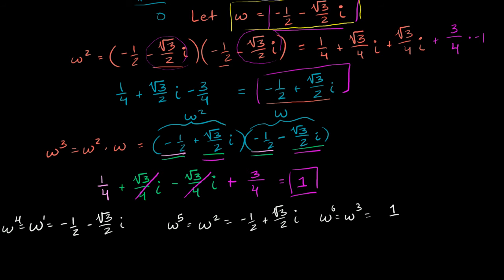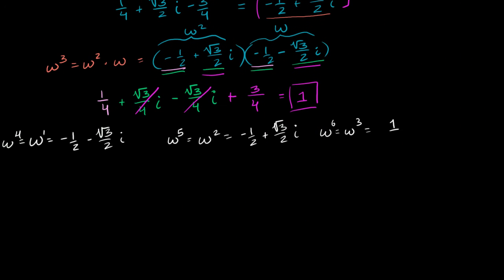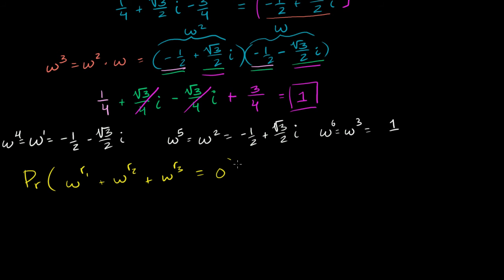The reason I went up to the sixth power is because in the original problem we're rolling a die. On a normal six-sided die, we get values between 1 and 6, and we take omega to those powers and see if the sum equals 0. We want to find the probability that omega to the r1 plus omega to the r2 plus omega to the r3 equals 0, where r1, r2, r3 are the three die rolls. This is what we need to figure out.